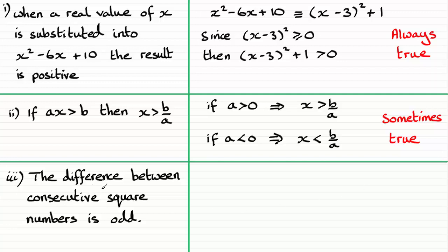And for the last statement, the difference between consecutive square numbers is odd. Well, to answer this one, I'm just going to say if n is a positive integer first of all. Just let n be a positive integer. And that would mean that the next consecutive integer would be n plus 1.